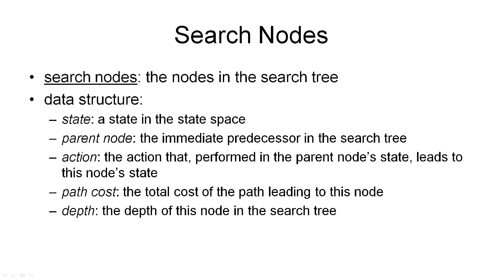A search node is a bookkeeping structure that encapsulates a state. Note that we will be using the search graph as a search tree, simply to make the algorithm slightly easier to explain. Each search node consists of five things. The first is the state encapsulated in the search node — a state corresponds to a configuration of our world, and a node is a place in our search tree.